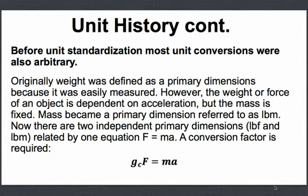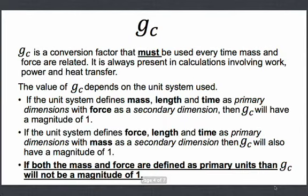This conversion factor, GC, is defined such that GC multiplied by the force is equal to mass times acceleration. GC is a conversion factor that must be used every time mass and force are related in some way. It is always present in calculations involving work, power, and heat transfer. The value of GC depends on the unit system used.